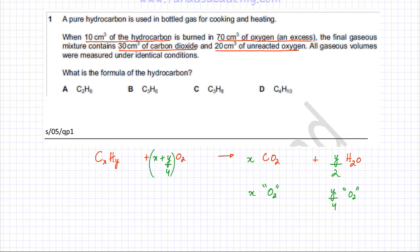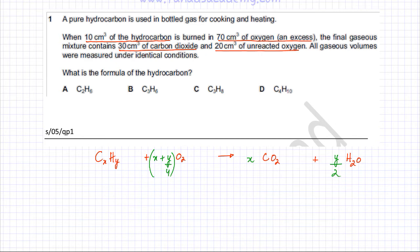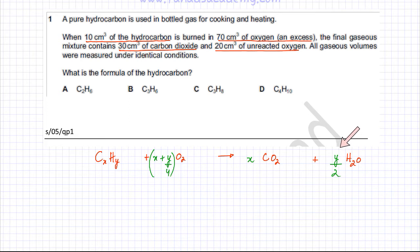So the key thing to remember is this balanced equation in terms of X and Y: CₓHᵧ + (X + Y/4)O₂ → X CO₂ + (Y/2)H₂O. If you remember this, most combustion analysis questions become very easy. Also remember that for gases, the mole ratio and volume ratio are exactly the same.